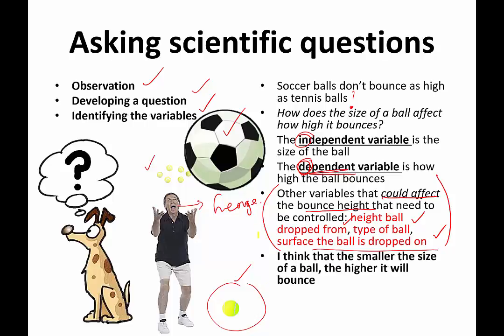Then you come up with a prediction — for example, 'I think that the smaller the size of a ball, the higher it will bounce.' You carry out your experiment, collect data, analyze it, and then draw conclusions and evaluate your experiment. In later videos, we're going to look at each one of those steps in detail, starting with planning investigations next.